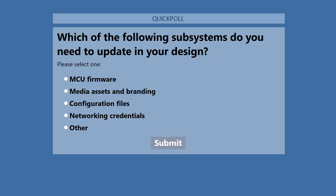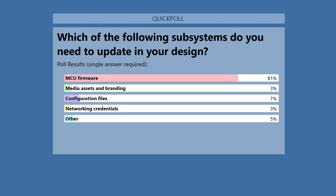Moving to the second poll — MCU firmware is obviously a big one, and config files is also interesting. I'm surprised that nobody has thought about media assets and branding. For those who said 'other,' we would love to hear what use cases you may have — feel free to share that in the chat or questions window, or reach out afterwards through our developer site or through your local account rep.